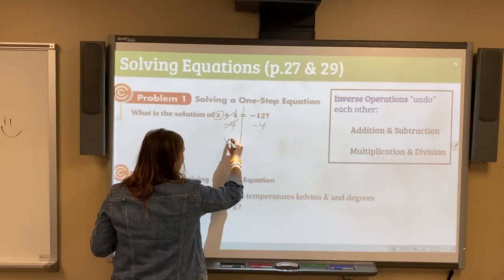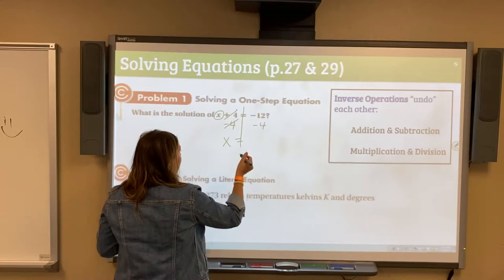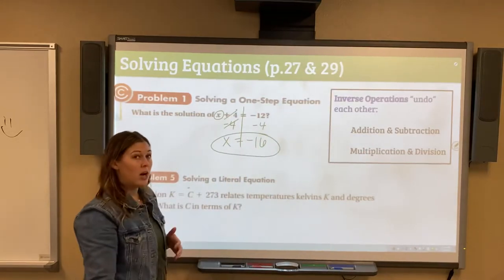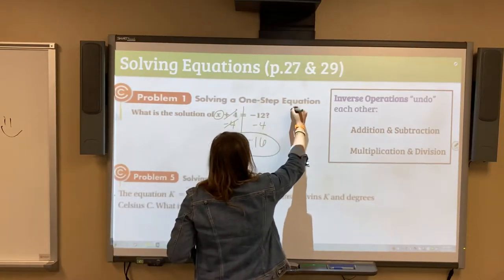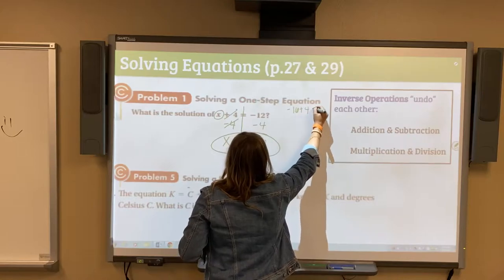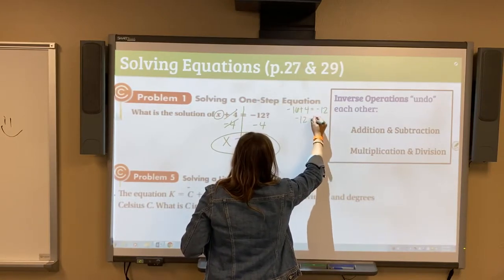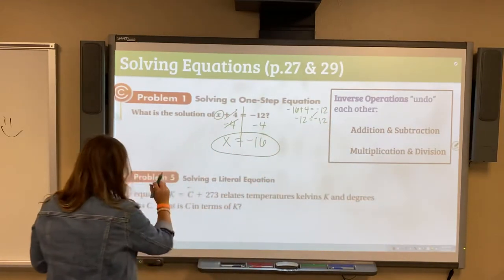Cancel, cancel. All we have left on the left is our x. Negative 12 minus 4 would be negative 16. One way to always recheck it is plug in negative 16 in for x. Negative 16 plus 4 equals negative 12. Well, negative 16 plus 4 is negative 12. Yes, negative 12 equals negative 12. So we are good to go.